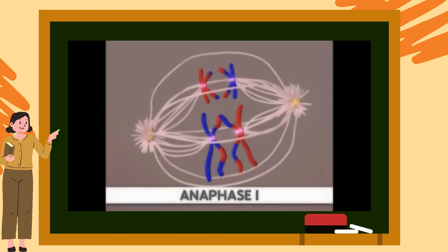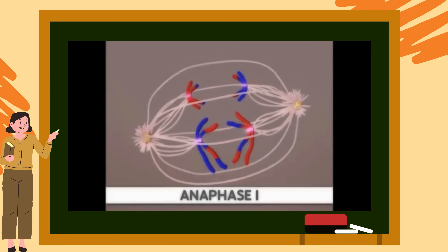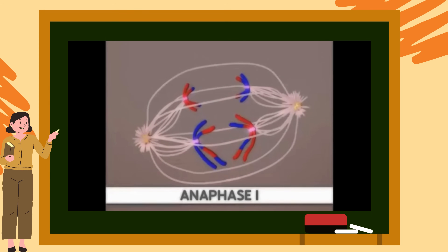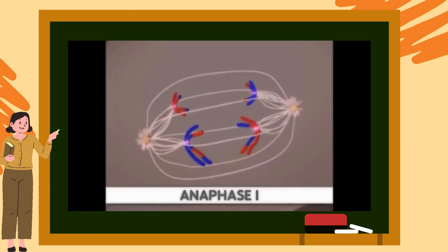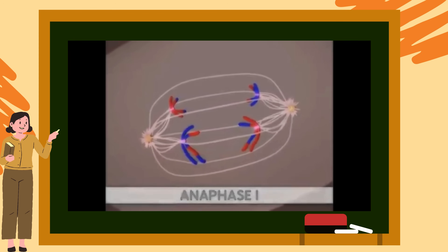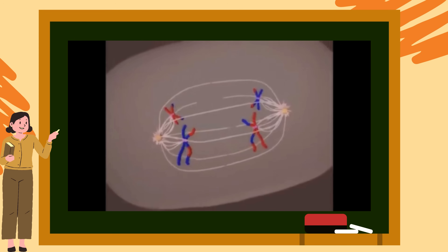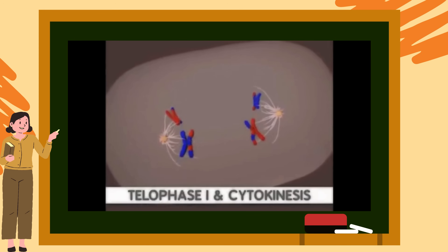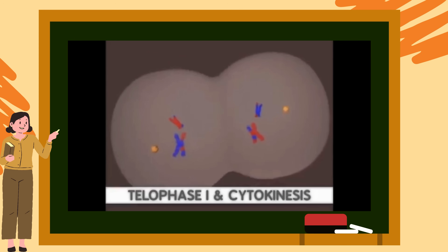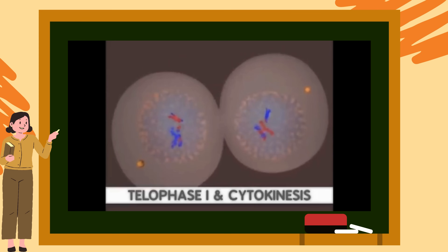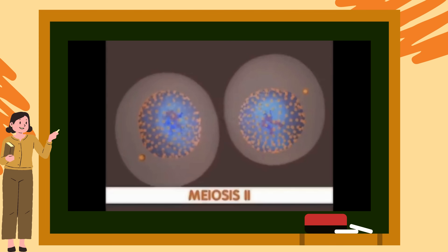The next phase is anaphase I. During this phase, homologous chromosomes separate and migrate to the two poles of the cell. Importantly, the sister chromatids remain attached at their centromeres. The final steps of meiosis I are telophase I and cytokinesis, where the cell divides into two daughter cells. Each of these two cells now undergoes meiosis II.